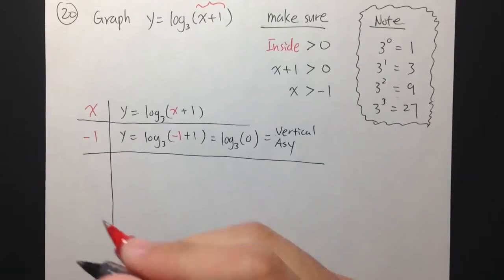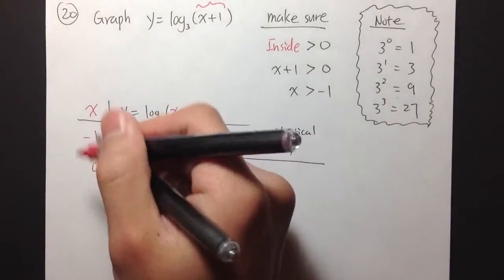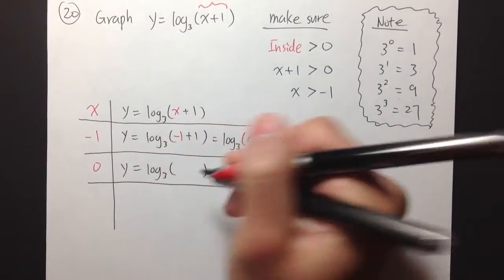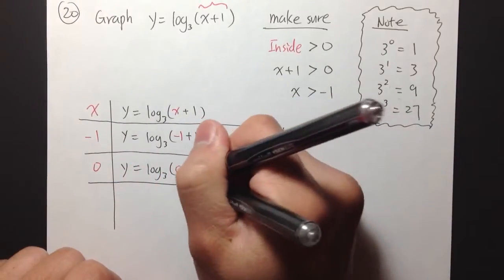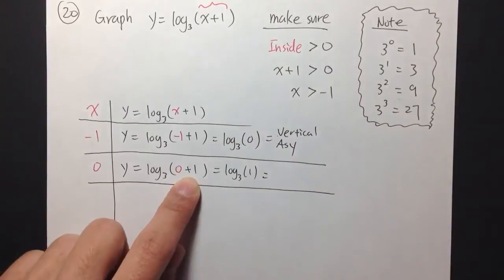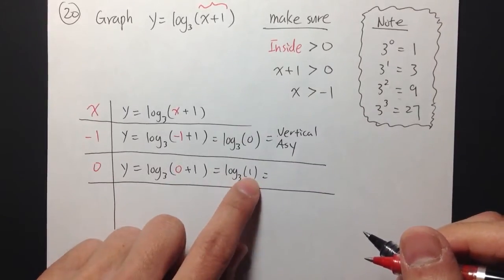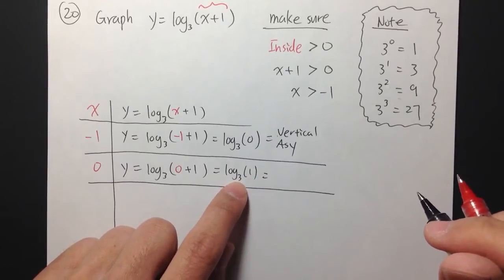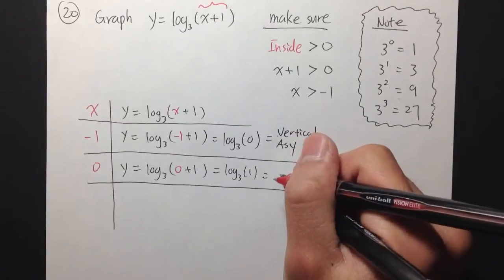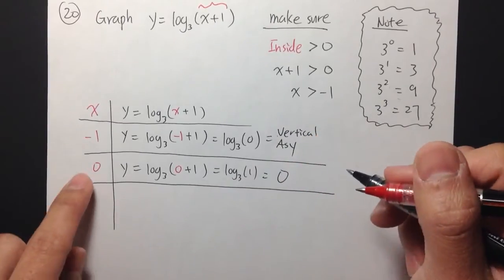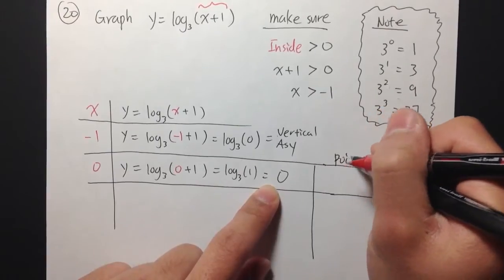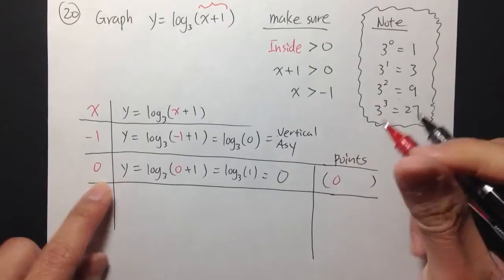For the first point, let's choose x equals 0. Then y equals log base 3 of (0 plus 1), which is log base 3 of 1. To figure out log base 3 of 1, we ask: 3 to what power equals 1? Since 3 to the 0 power equals 1, the answer is 0. So we have our first point: (0, 0).